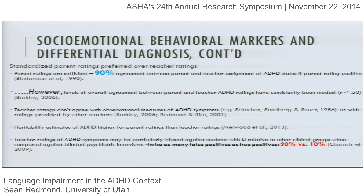I'm going to suggest that parent ratings are going to give us the clearest signal on what's going on with kids with language impairments in the areas tapped by ADHD. But we also have to examine the scales themselves for content and see if there might be confounds. Many commonly used pediatric psychiatric scales include language and academic items. It's not a stretch to suggest that including items like 'won't talk,' 'has speech problems,' or 'poor school work' will also tap into the dimensions of language impairment.